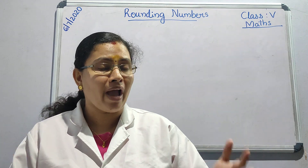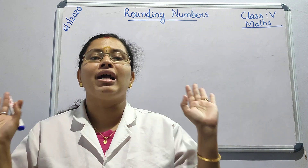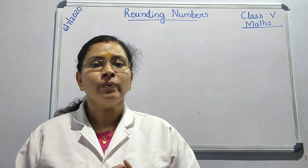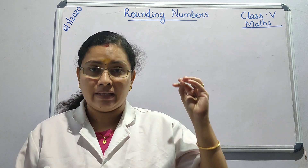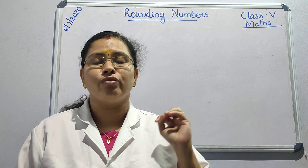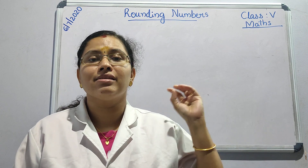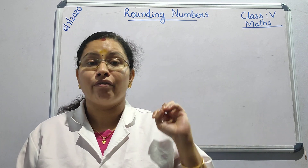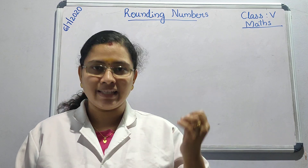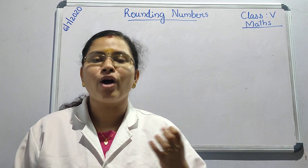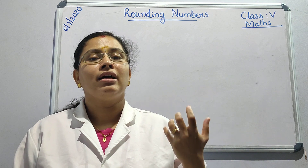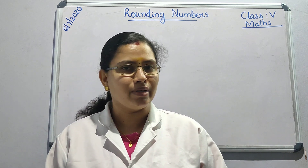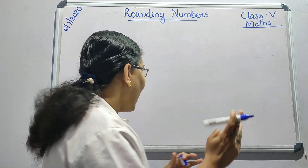So in all these cases, what have you done? You are finding out the approximate number. This is what is called rounding off. Such numbers are called rounding numbers. That means the way of expressing numbers approximately is known as rounding off, and such numbers are called rounding numbers. Hope you understood this — I will write that.